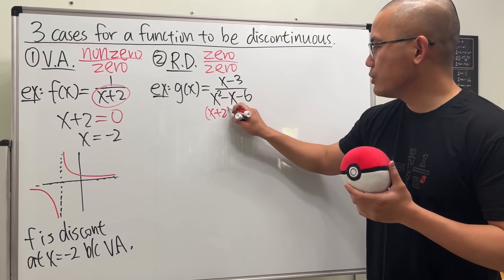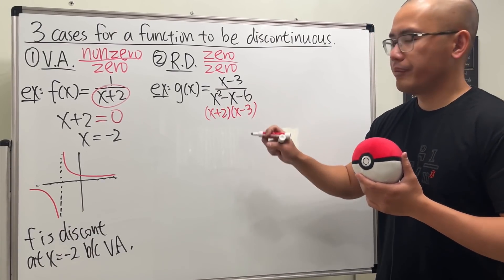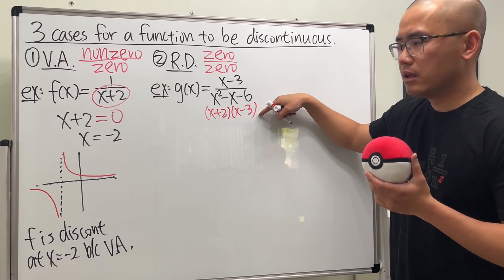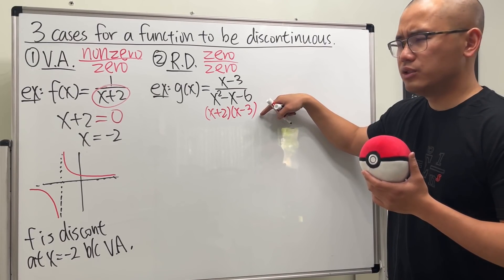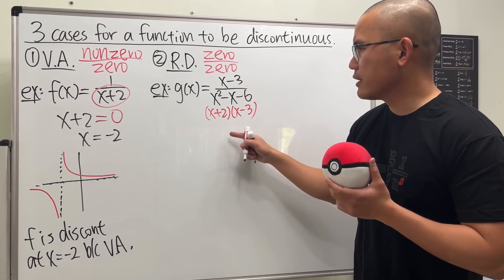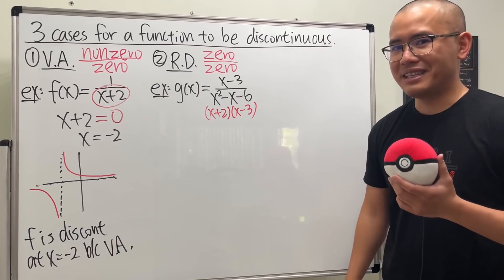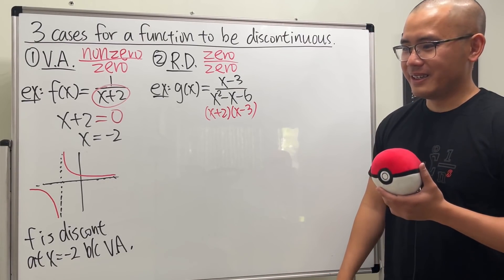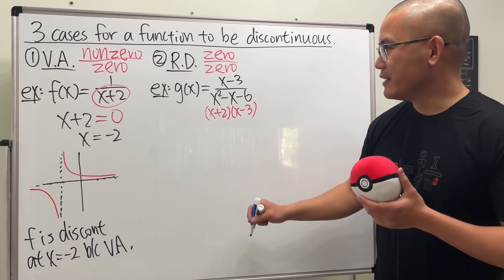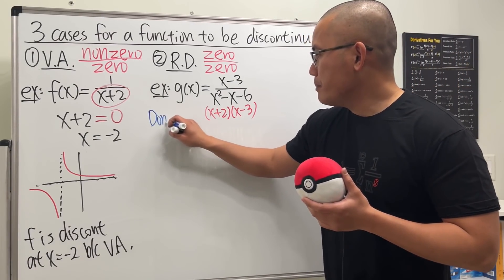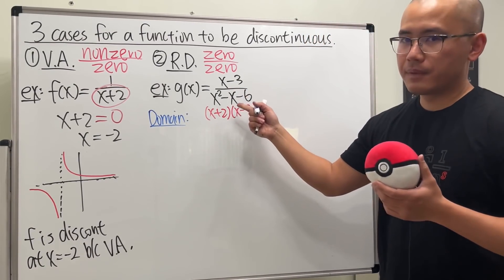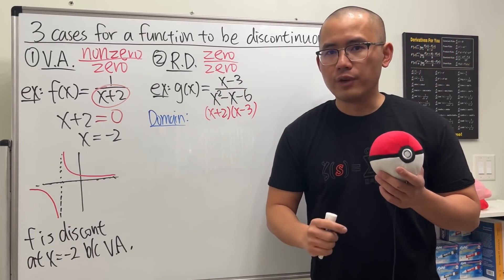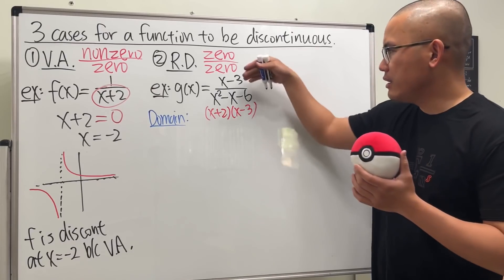When we factor the bottom we get x plus two times x minus three. So it seems like we can just cancel, leaving one over x plus two — same as the first one, right? Not exactly. We have to pay close attention to the domain issue. Whenever we have a rational function, the bottom cannot equal zero, and we always have to refer to the original expression before doing any cancellations.